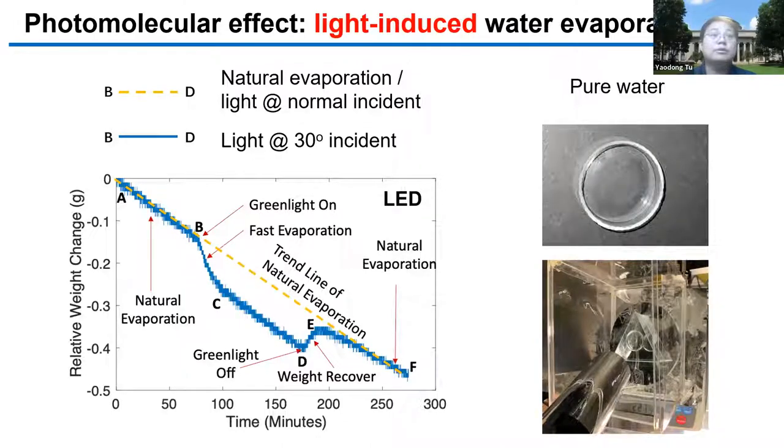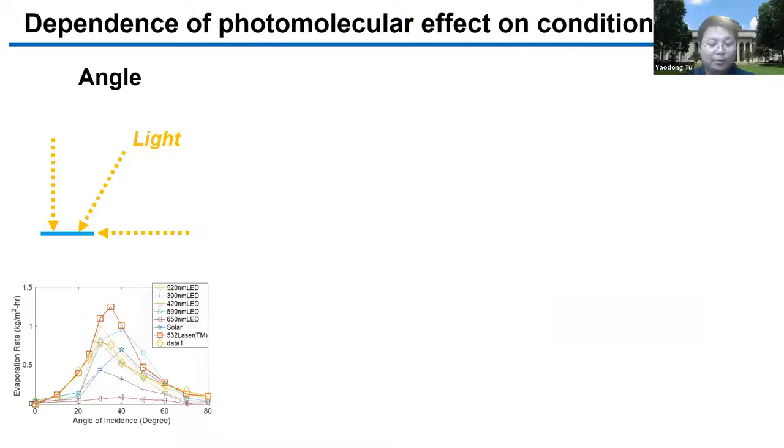We also observe many other effects that point towards the photomolecular effect. First is the angle dependence. Here you can see the evaporation rate will peak around 30 to 40 degrees. We believe this suggests part of the electric field of the incident light should be perpendicular to the water surface. In this case, the electric field can drive up the water from the surface.